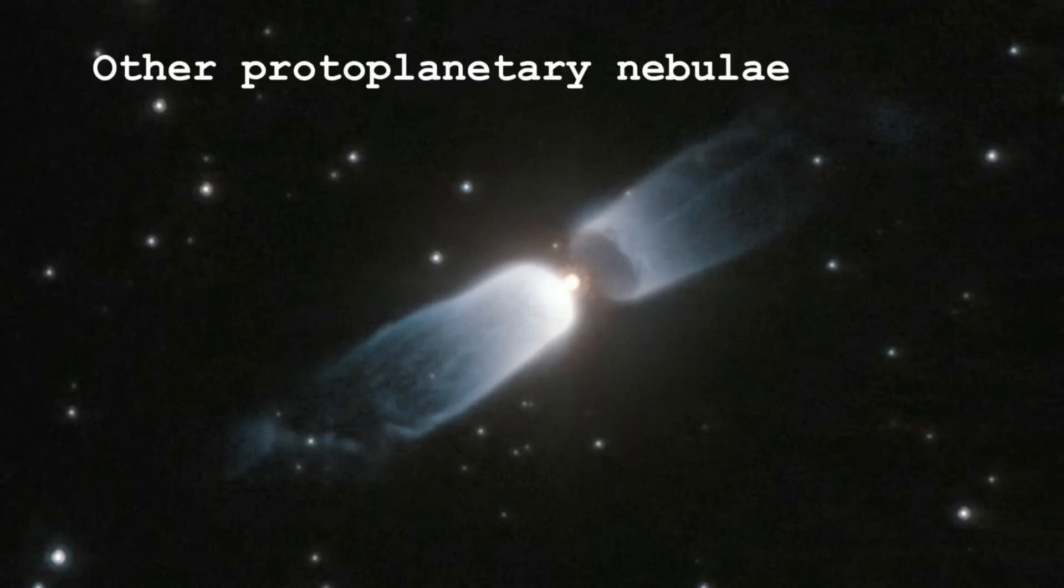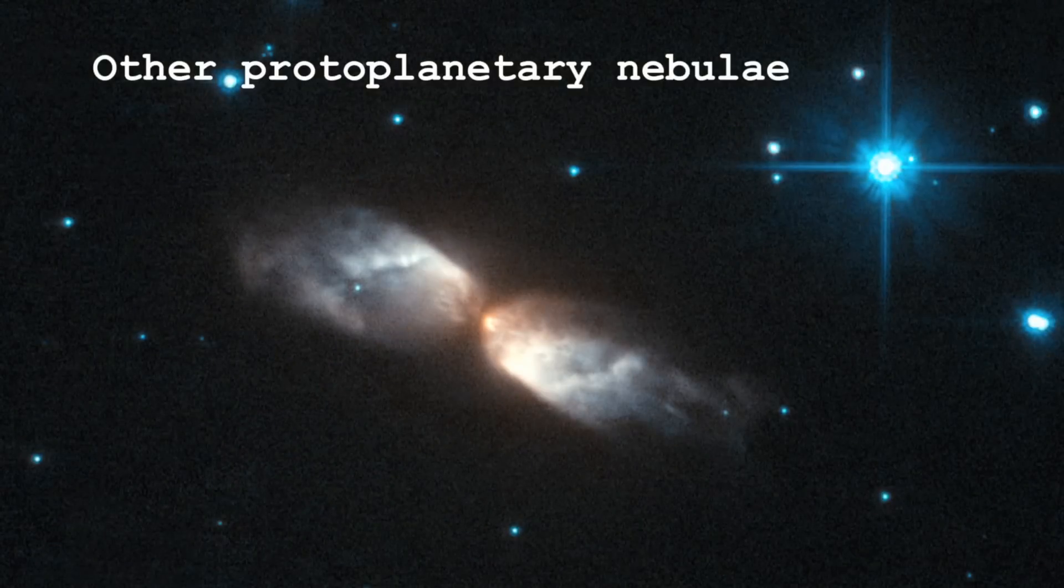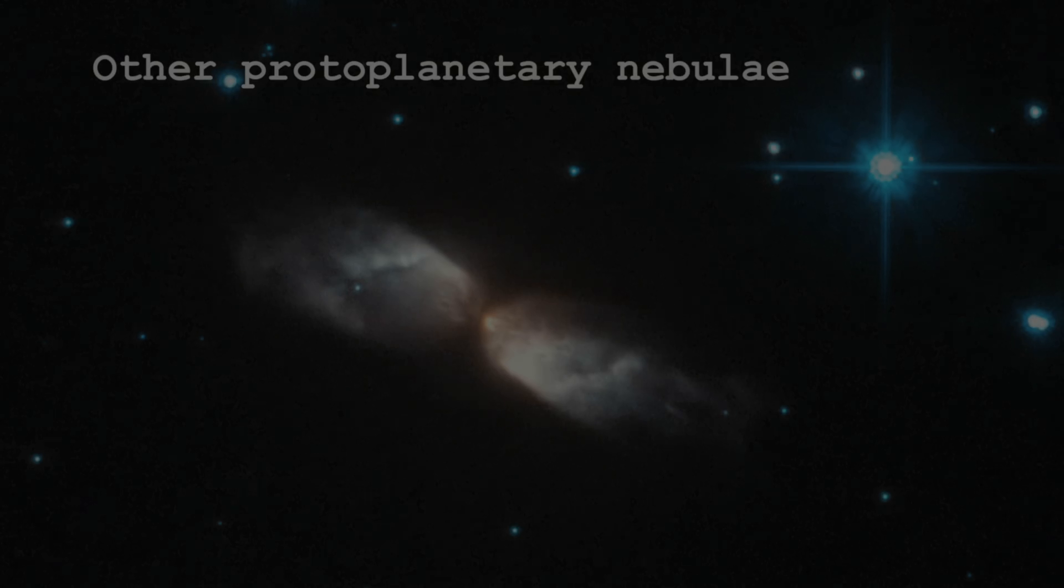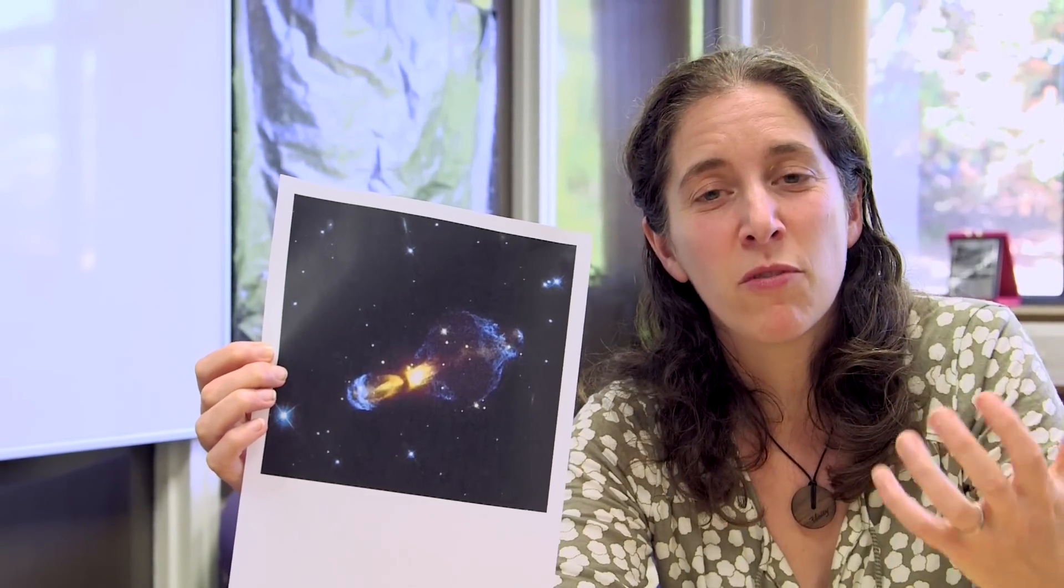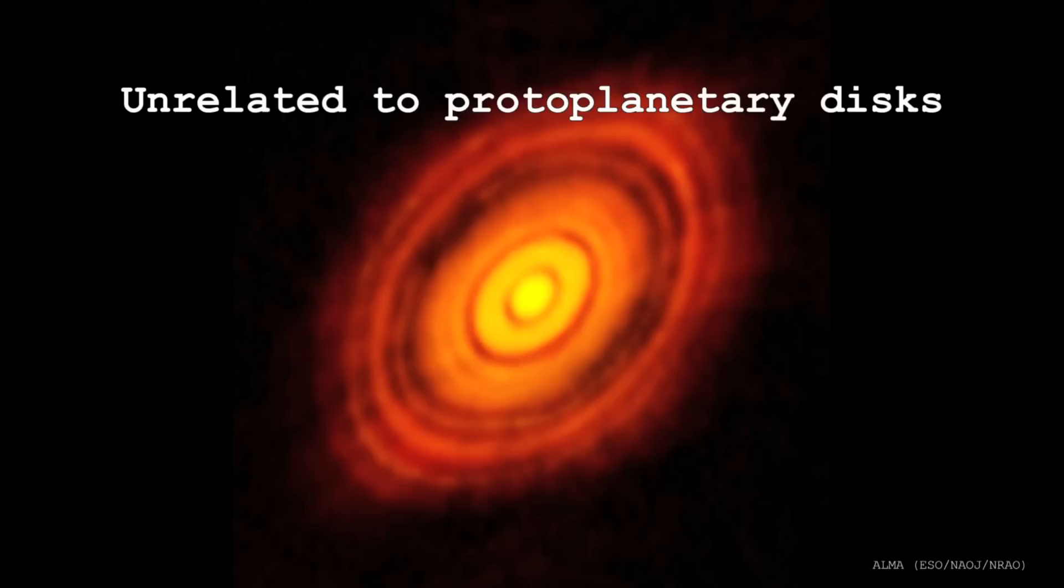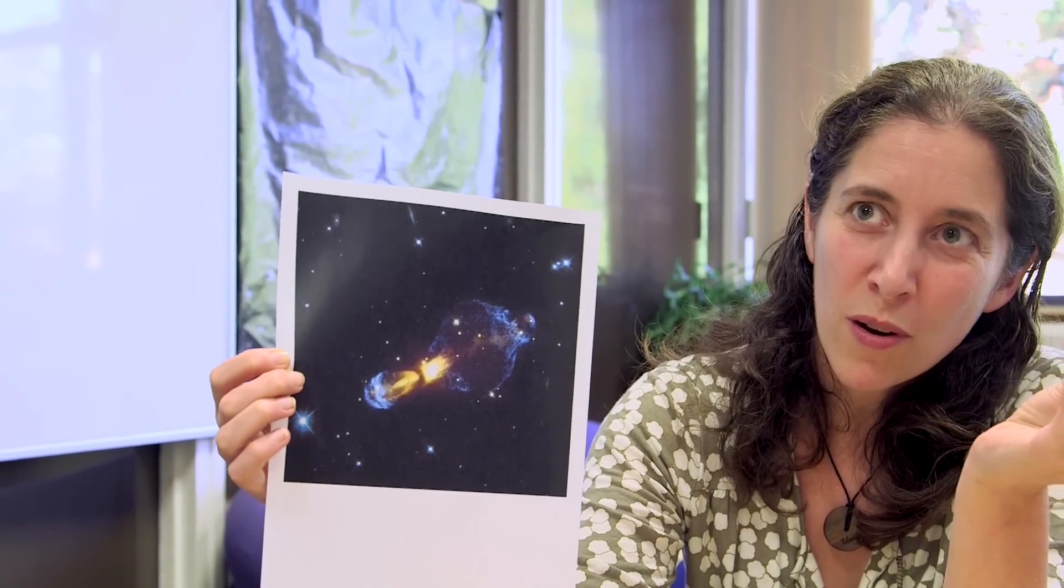What you're seeing here is a stage in stellar evolution that comes just before a star becomes a planetary nebula. This is called a protoplanetary nebula, which is another really unfortunate name, because it gets mixed up with what we call the disk of debris that's collecting before you form an actual star, the other end of a stellar lifetime. But this is basically a protoplanetary nebula, before the planetary nebula stage.